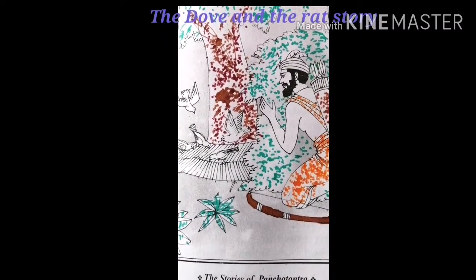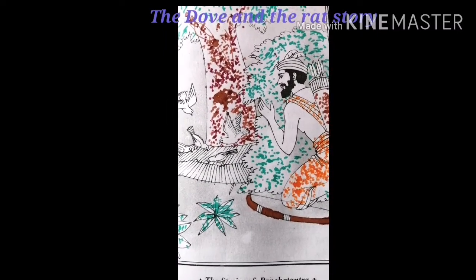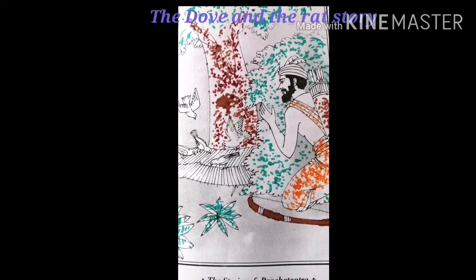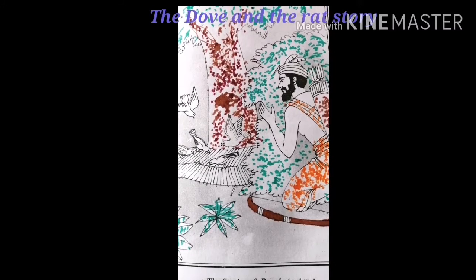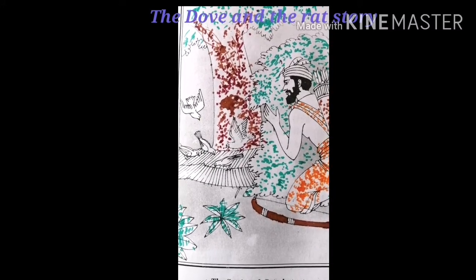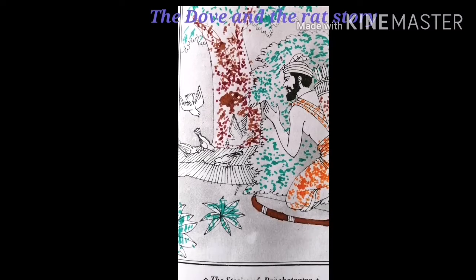Long, long ago there stood a banyan tree on the banks of the river Godavari. It is a huge tree with enlarged branches. All kinds of birds had built their nests in this tree.